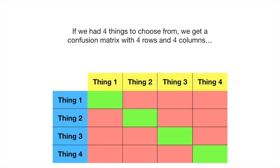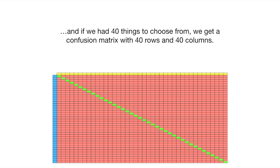If we had four things to choose from, we get a confusion matrix with four rows and four columns. And if we had 40 things to choose from, we get a confusion matrix with 40 rows and 40 columns. Double bam!